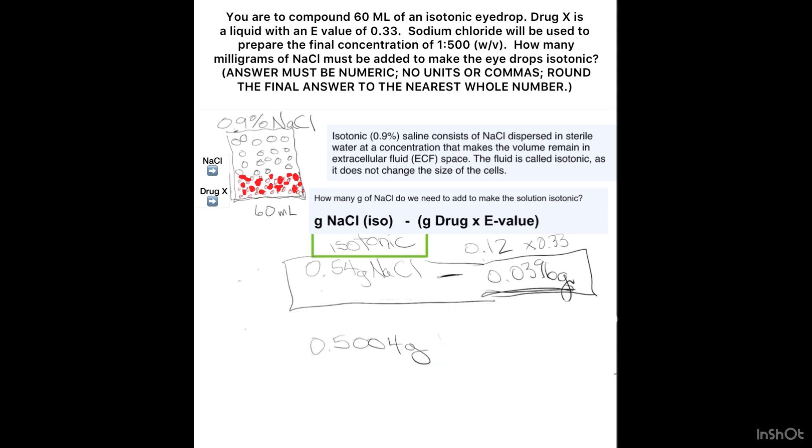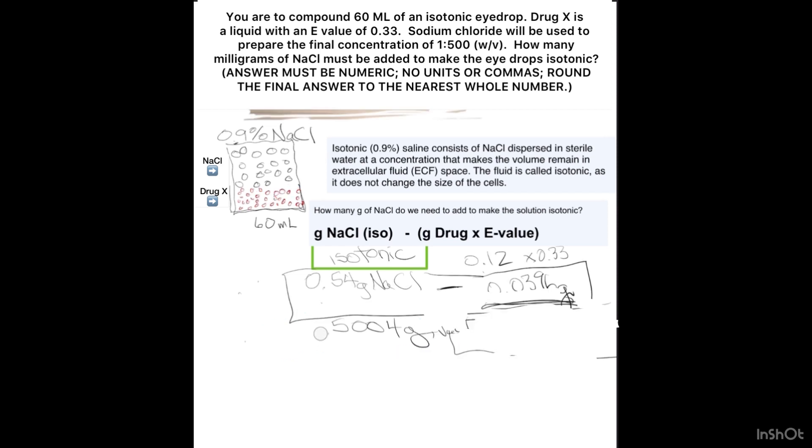But I'm not done, right? I always need to double check. Am I answering the actual question? The question says, how many milligrams of sodium chloride? That only got me grams. So I'm going to move my decimal point three places to the right. 500 milligrams. I round down.